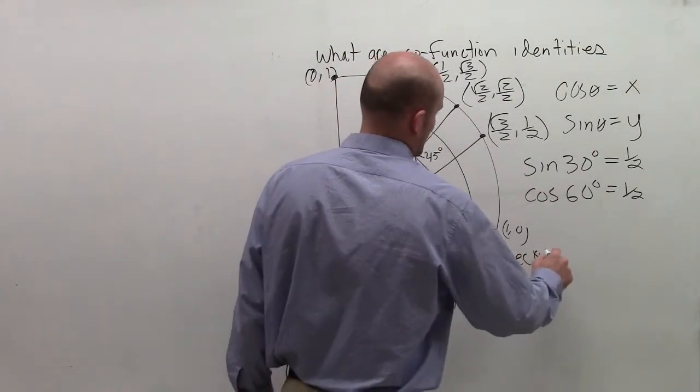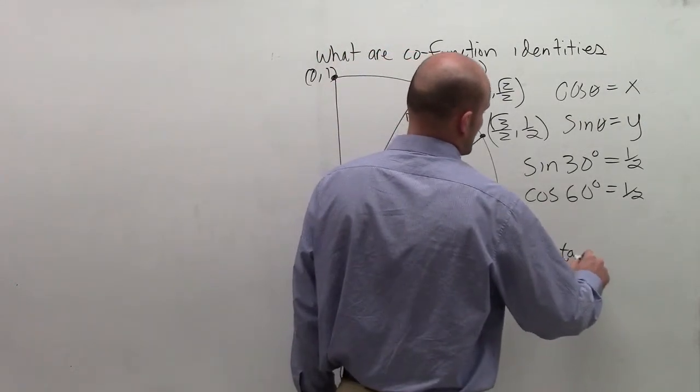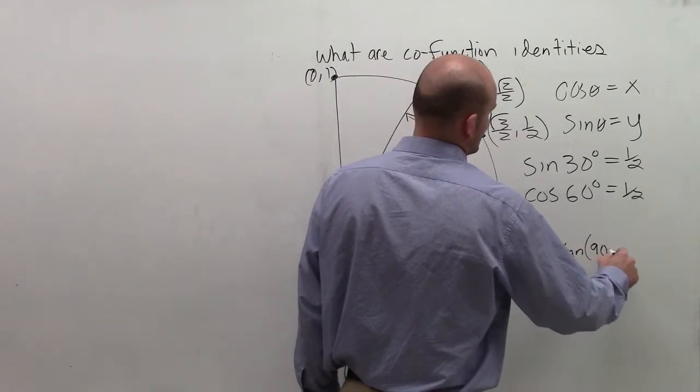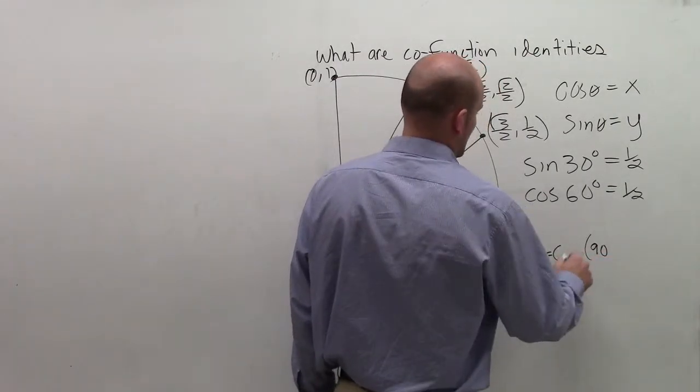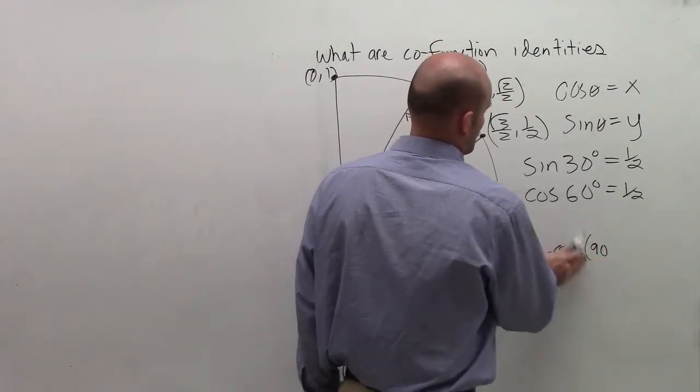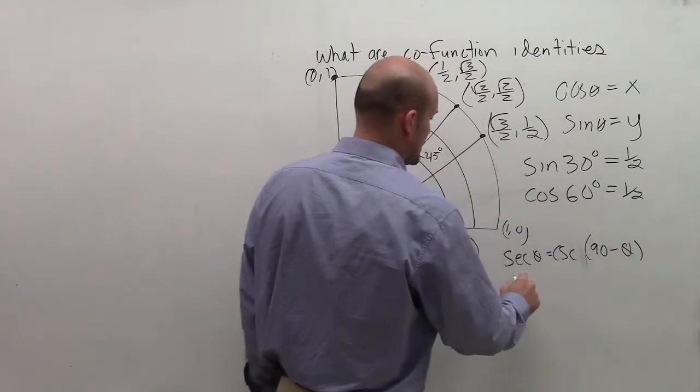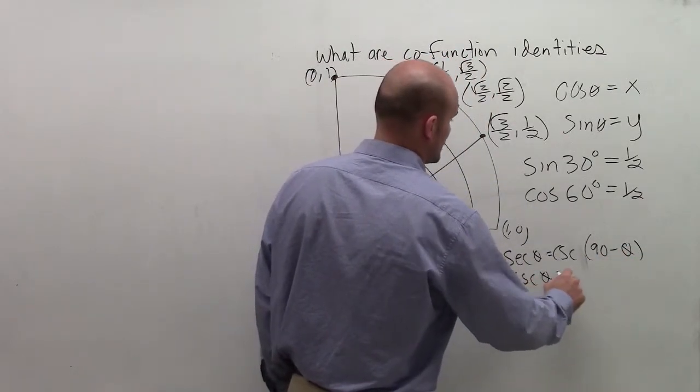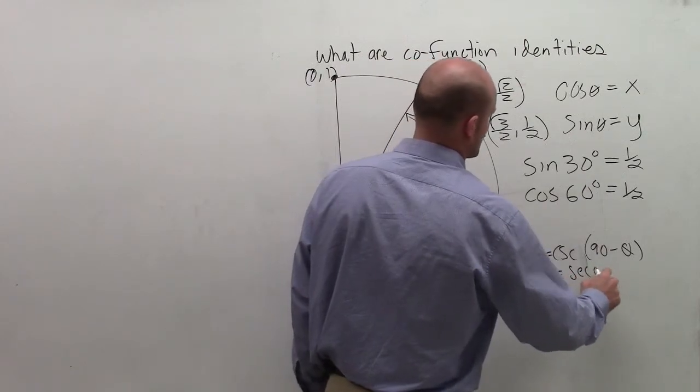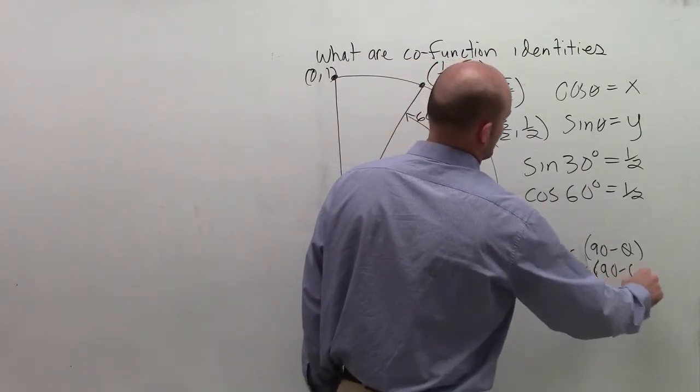And then we'll put over here, we could also have secant of theta is equal to the tangent of 90, not tangent, the cosecant of 90 minus theta, as well as the cosecant of theta is equal to the secant of 90 minus theta.